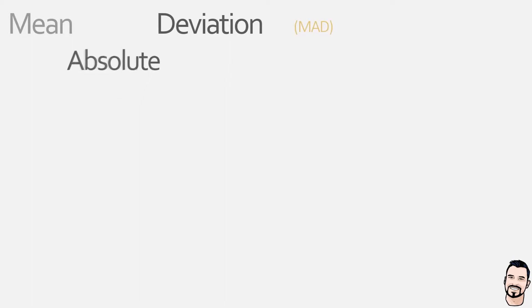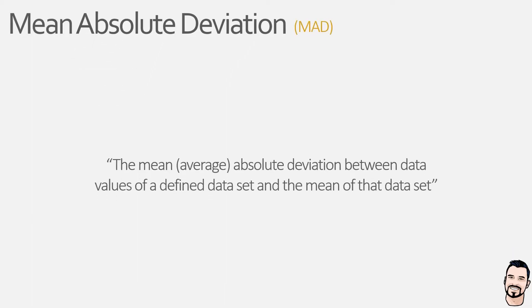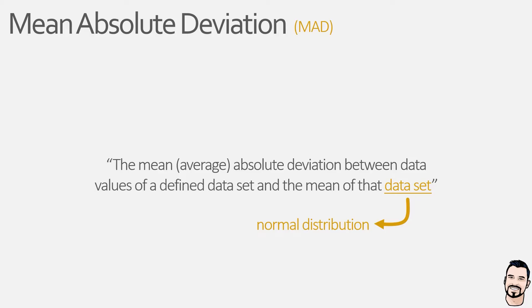The mean absolute deviation is a statistical value relating to the average absolute deviation between each data value of a data set and the mean value of that data set. It gives us an idea of how dispersed the data values are and the variability of the data. We should only determine the mean absolute deviation on data that is normally distributed — where the data follows a bell-shaped distribution with values closer to the mean occurring more frequently.